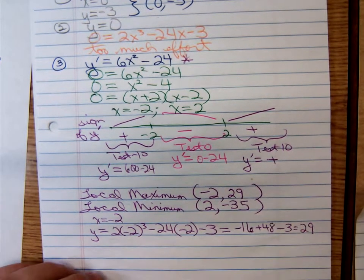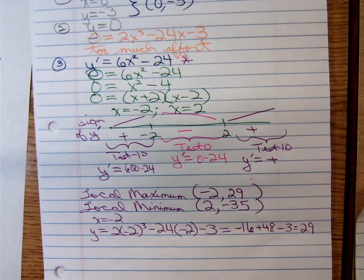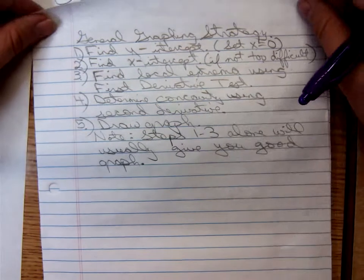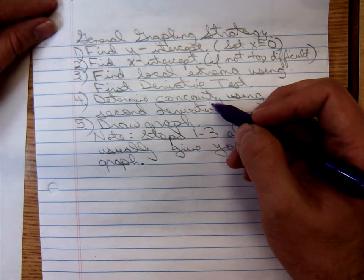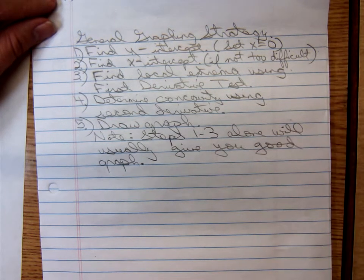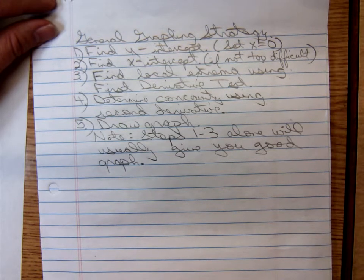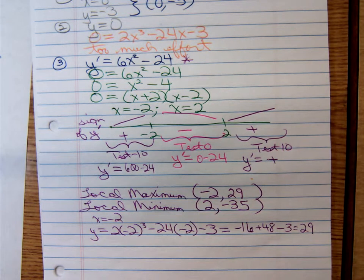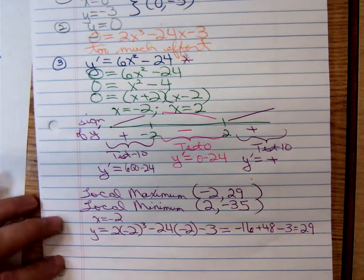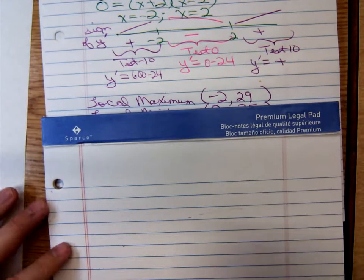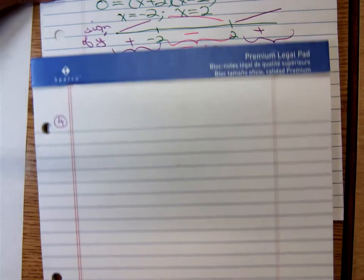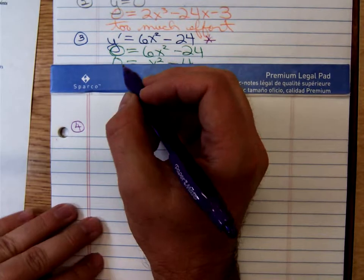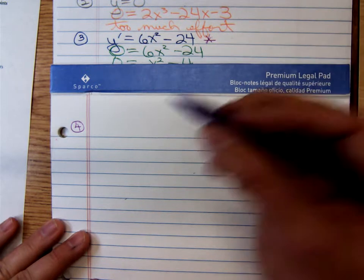Now we'll go ahead and determine concavity. Our fourth step, we determine concavity. Although we could get a good picture drawn right now if we wanted to, MyMathLab isn't going to let you forget about concavity. They're going to make you determine that concavity if you want full credit. So step number four, to determine concavity, what do I have to do? Second derivative.